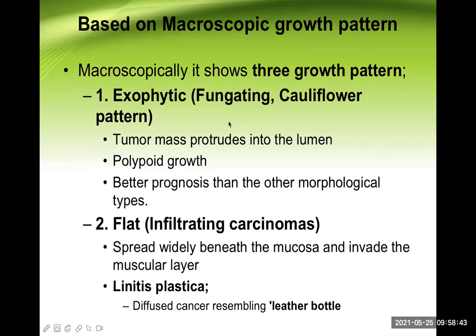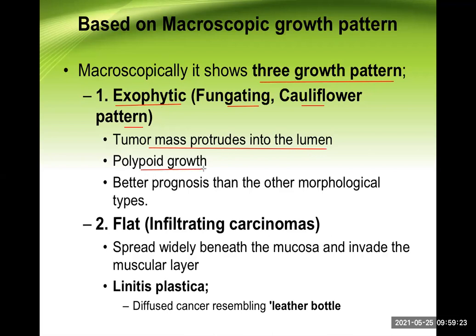Macroscopically, gastric cancer shows three growth patterns. First is exophytic, also known as fungating or cauliflower pattern of growth. Exophytic means from the mucosal surface it protrudes towards the lumen. The tumor mass protrudes into the lumen — a polypoid type of growth — and it has a better prognosis than other morphological types, probably because of earlier diagnosis. When the size of the stomach lumen is substantially decreased, the person will have early satiety, vomiting, hematemesis, or melena, leading to earlier diagnosis.